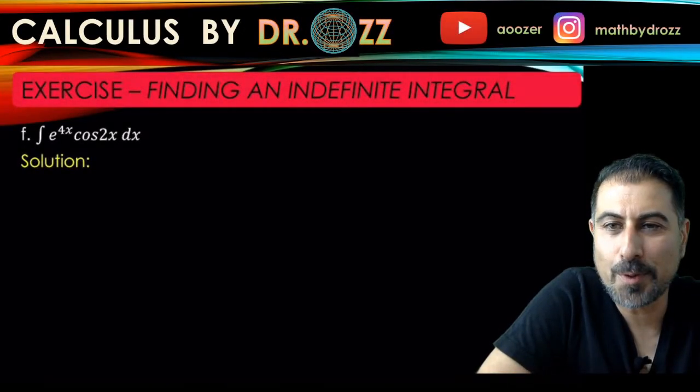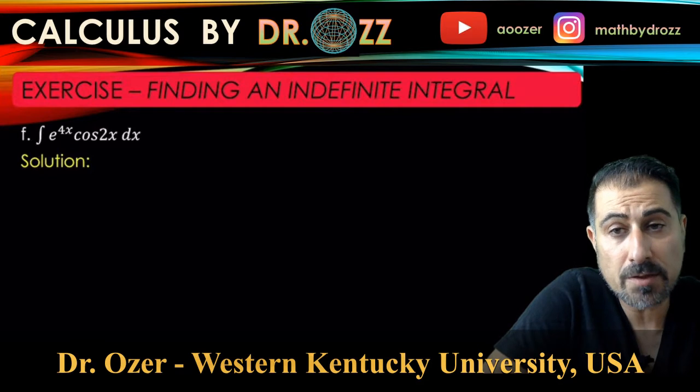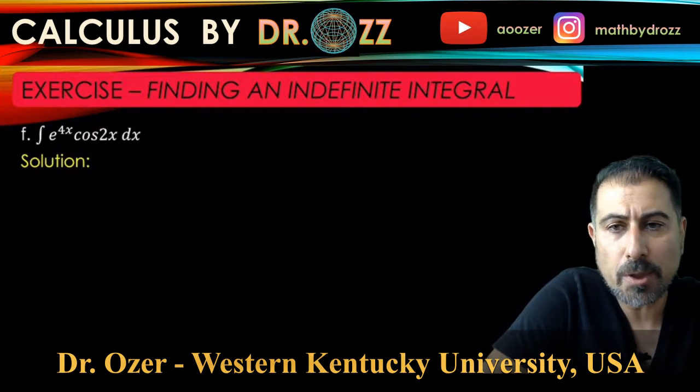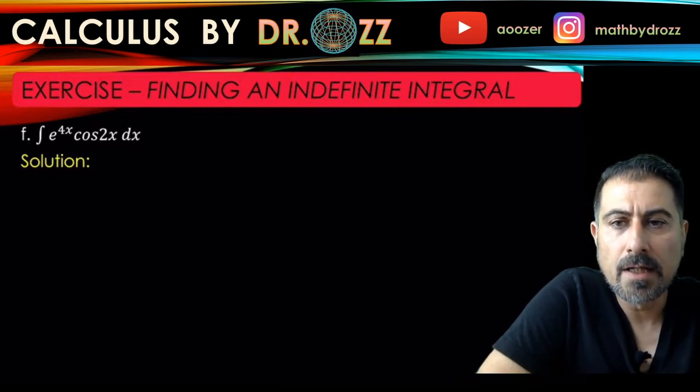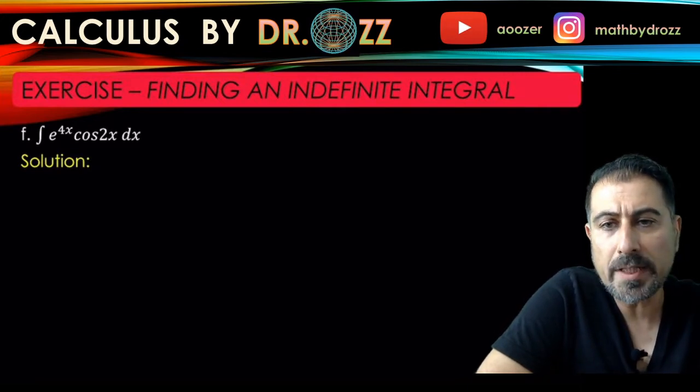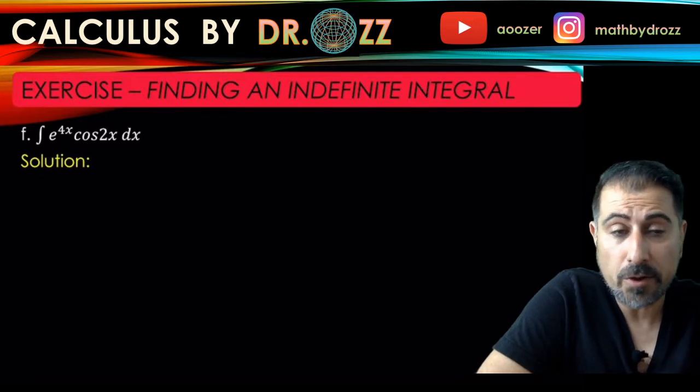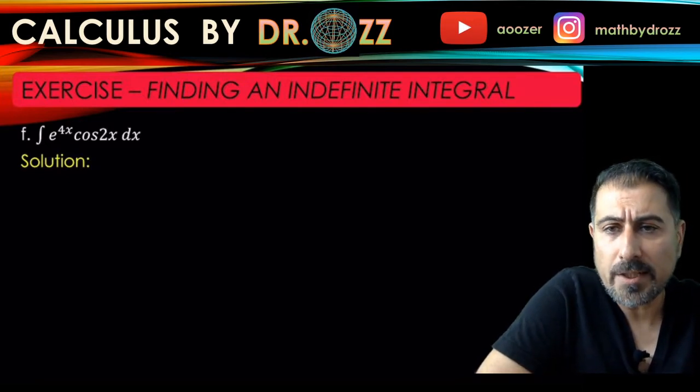Alright, let's do part F. Before I start, I want to tell you that this is a very special type of integral - it's exponential against trig function cosine 2x. This is what we call a looping or circling integral, which is a good application of integration by parts.